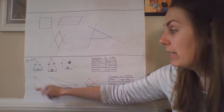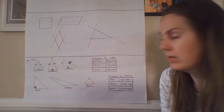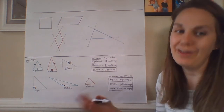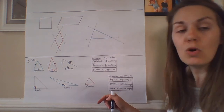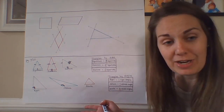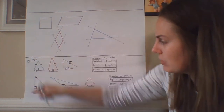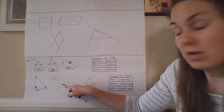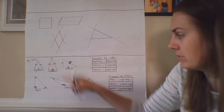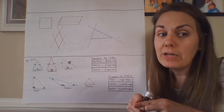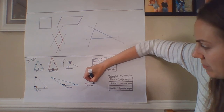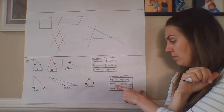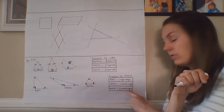We can also classify triangles by their angles. A right triangle has one right angle. An obtuse triangle has one obtuse angle. For an acute triangle, all three angles must be acute — not just one or two. Note that a right triangle still has two acute angles, but it's called a right triangle because of the one right angle present.